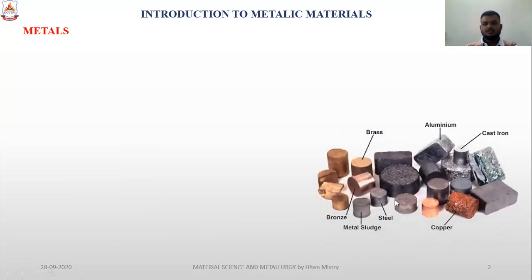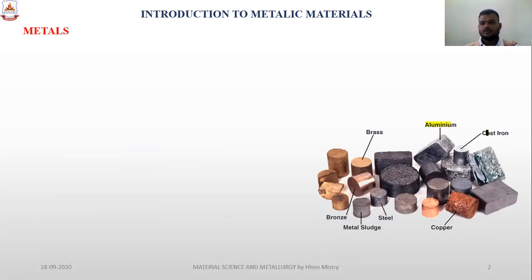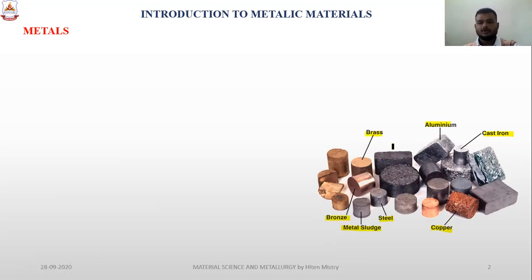Here we can see various kinds of metals available in day-to-day life — brass, aluminium, cast iron, copper, steel, metallic sludge, and bronze. Every metal has a different composition and property.